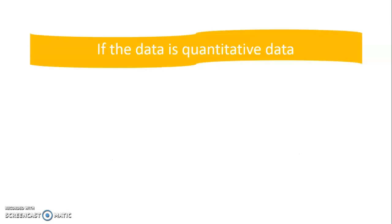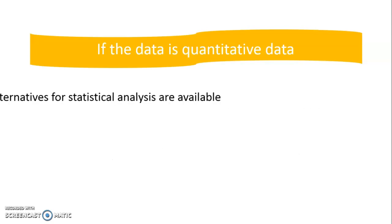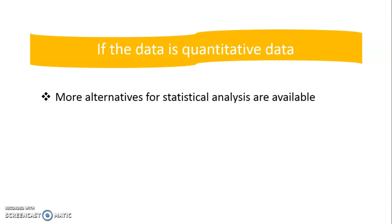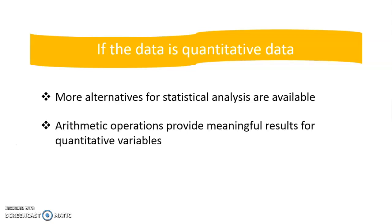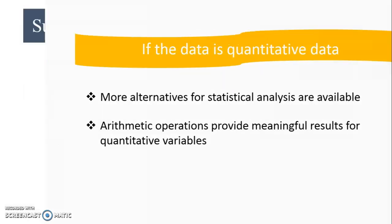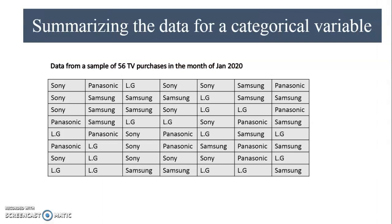If the data is quantitative, we have more alternatives for statistical analysis. Arithmetic operations can also be performed on quantitative data and we can gain much more meaningful results. Now let's understand how we can summarize data for a categorical variable.